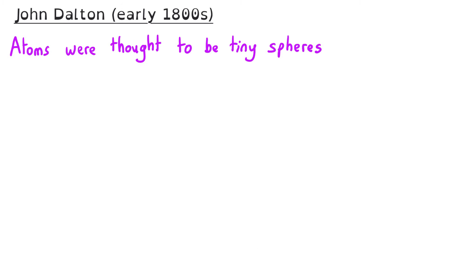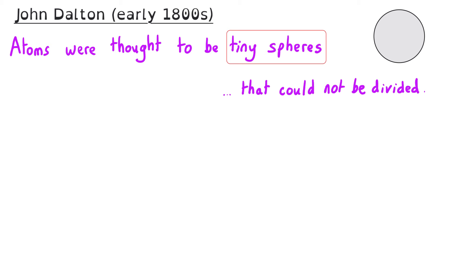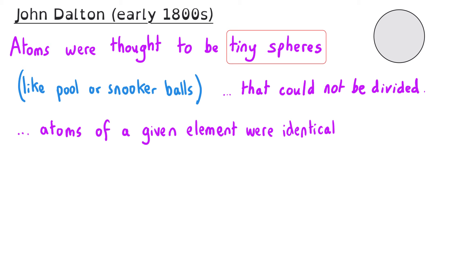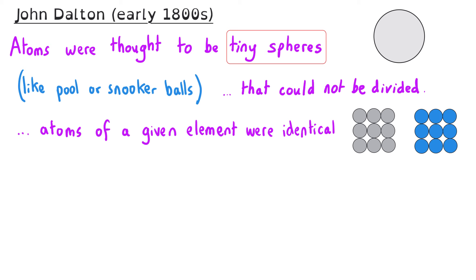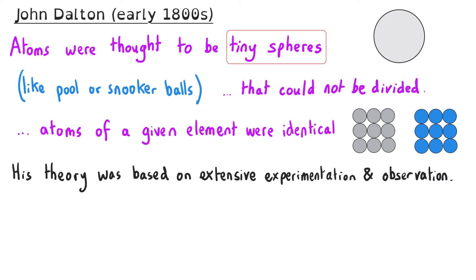John Dalton was an English chemist, and he was a big fan of the ideas of the ancient Greek philosophers from thousands of years before. Like them, he thought that atoms were tiny spheres that could not be divided. He likened them to the balls used for a game called billiards, which evolved into pool and snooker today. In 1803, he put forward his billiard ball model, which effectively just built on the idea of the ancient Greeks. He also proved that the atoms of any given element were identical to each other, but different from atoms of other elements. Unlike the ancient Greeks, who effectively talked and thought about their ideas, his theory and model was based on extensive reproducible experimentation and observation.